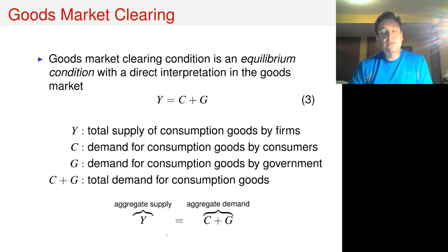I want to emphasize that this is an equilibrium condition with a direct interpretation in the goods market. Y is the total supply of goods by firms, and there are two sources of demand for those goods: consumption, which is demand for goods by households, and government purchases, which is demand for goods by the government. Goods market clearing can be interpreted as aggregate supply of goods equals aggregate demand for goods.